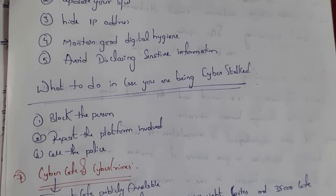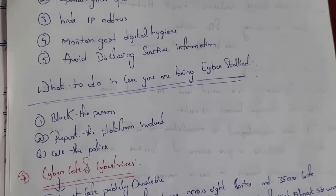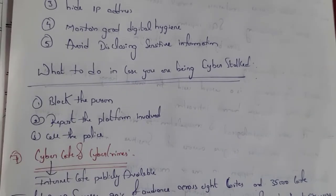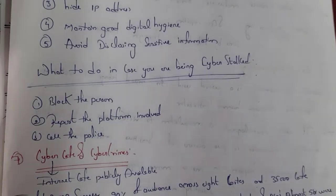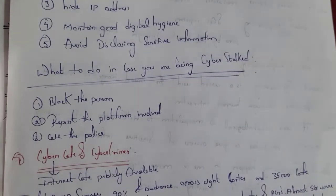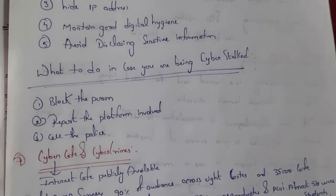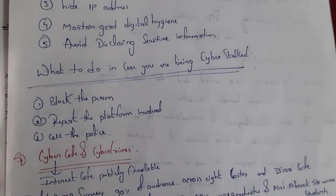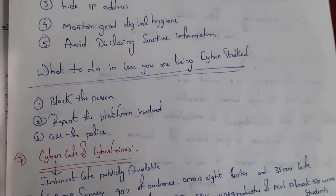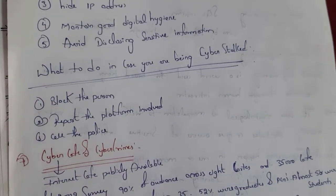What to do if you have been stalked: First, block the person — if any person is blackmailing or harassing you, the first step is to block them. Next, report to the platform — if that person is blackmailing you on WhatsApp, report them to WhatsApp. Last, call the police. These are the three steps to follow.